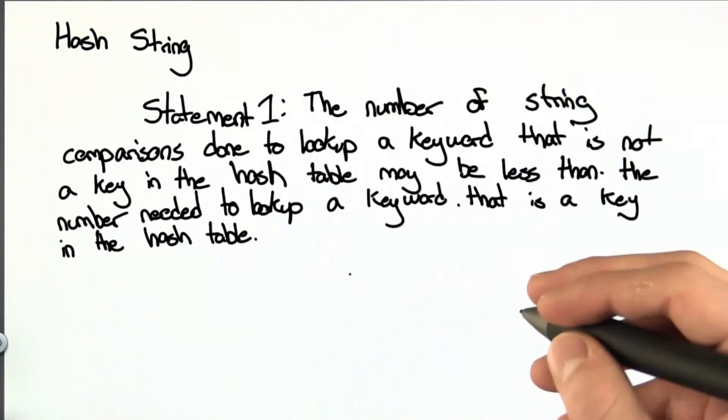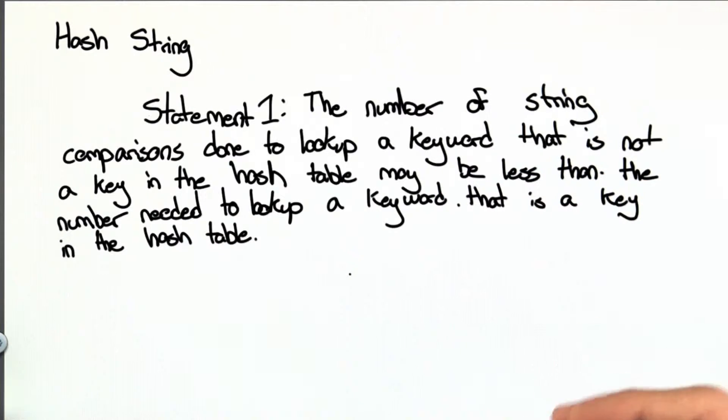The first statement says, the number of string comparisons done to look up a keyword that is not a key in the hash table may be less than the number needed to look up a keyword that is a key in the hash table.